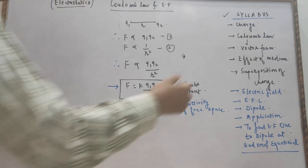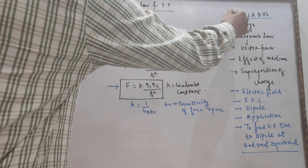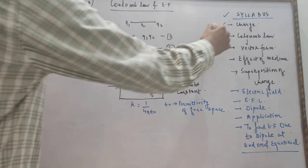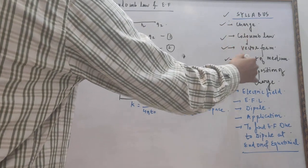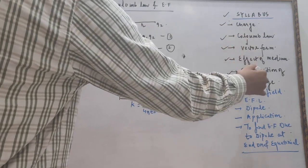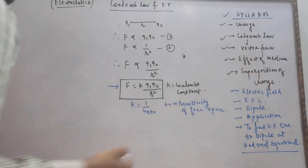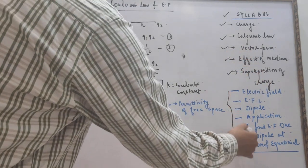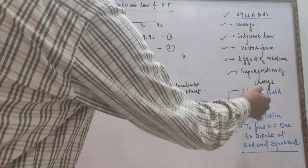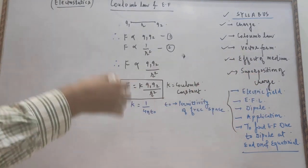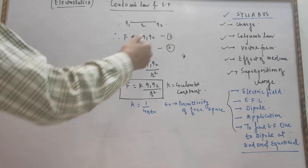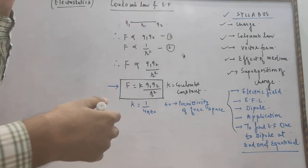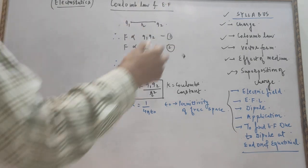The topics we are going to cover in this chapter are: charge, Coulomb's law, vector form of Coulomb's law, effect of medium, and superposition of charge. The topics written with the blue marker will be covered in the next lecture or after. So first we will start with the very first topic, that is charge.